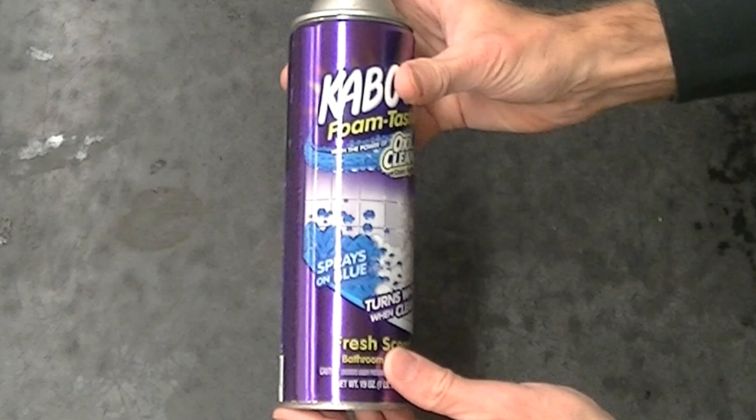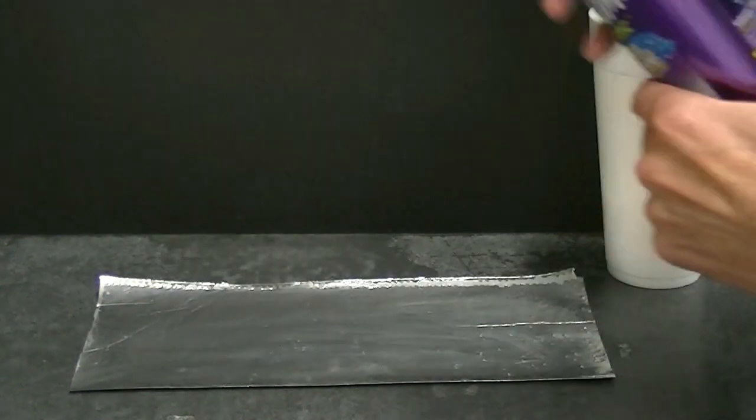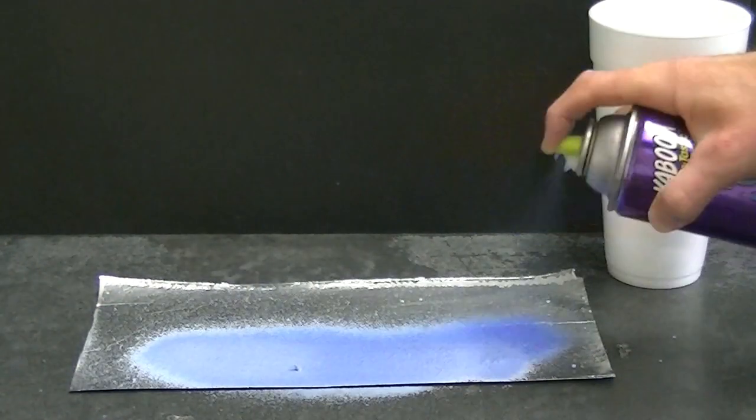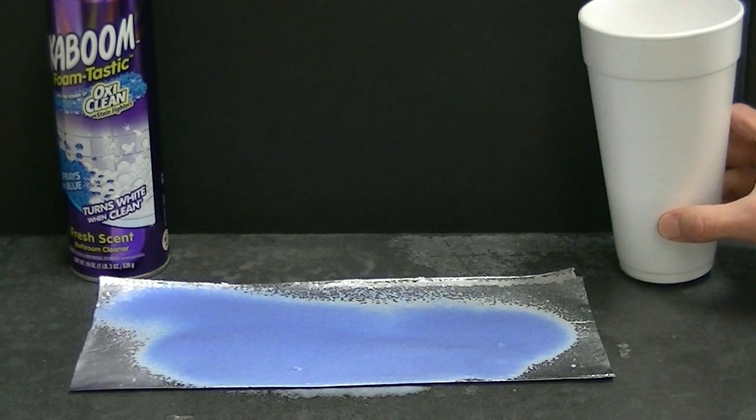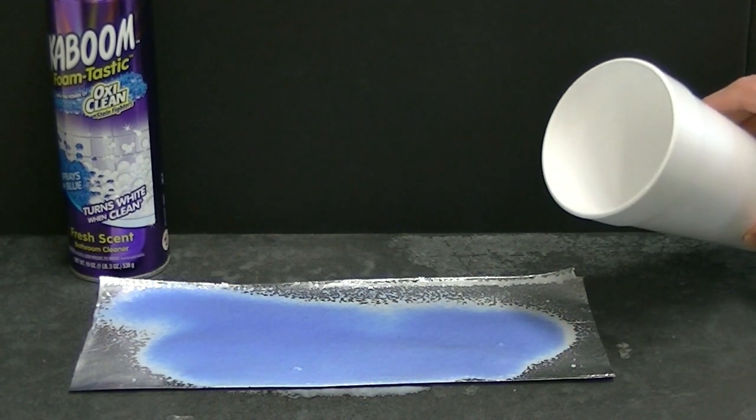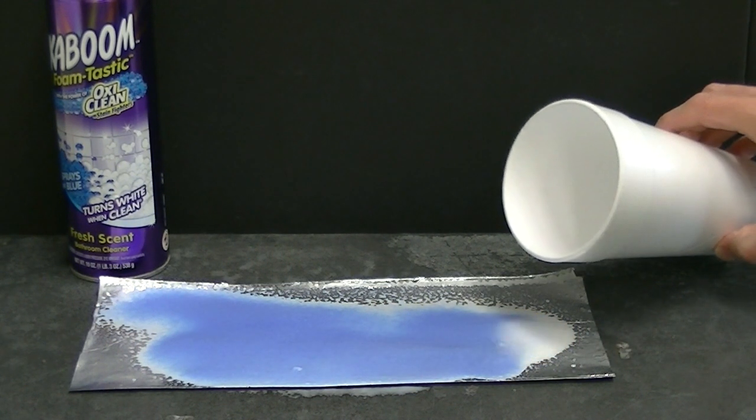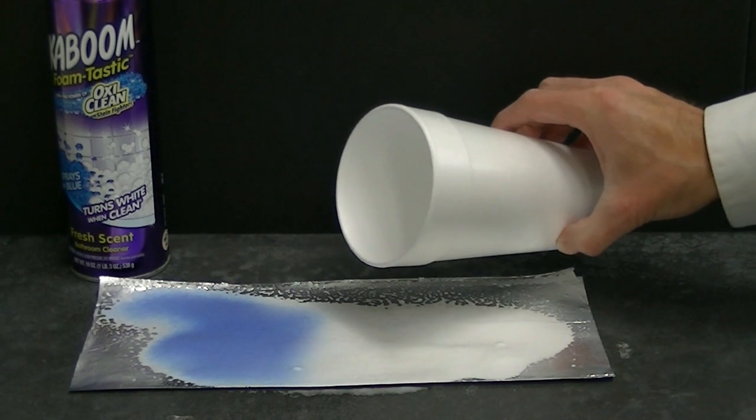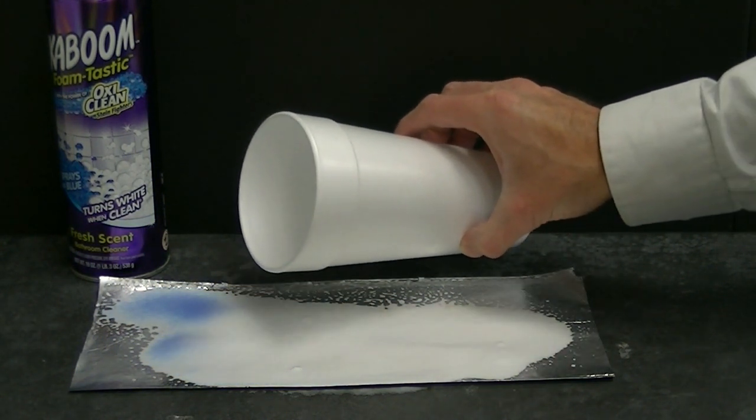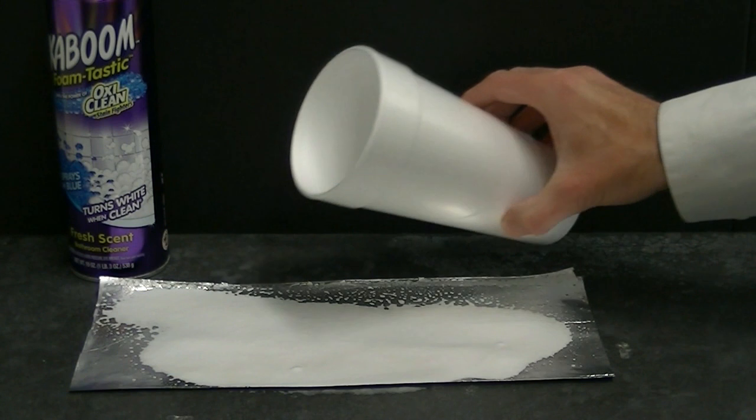I don't want to ruin the surprise. To carry out the trick, I'll first spray the cleaner onto this surface, and then I'll pour the contents of this magic cup onto the cleaner. Wow, that's really cool! It changes the cleaner from blue to white right before your eyes.